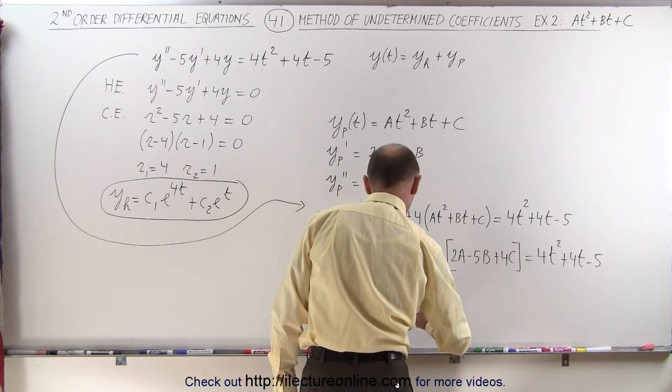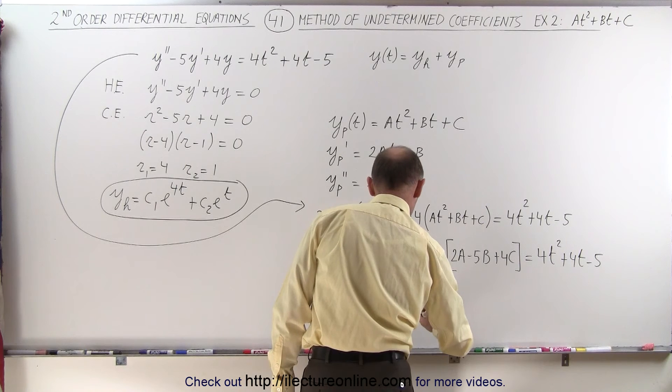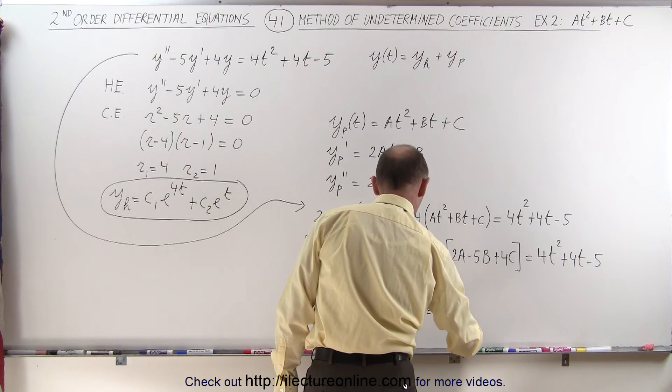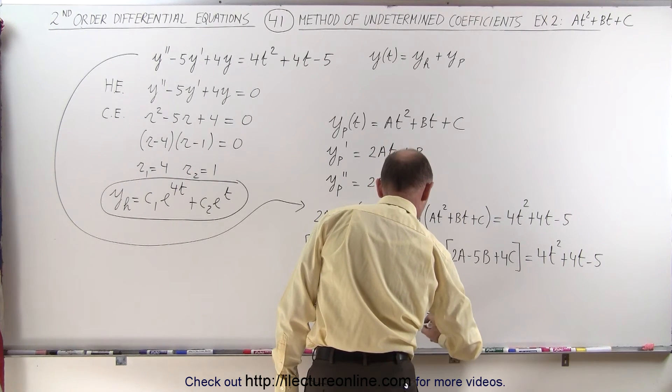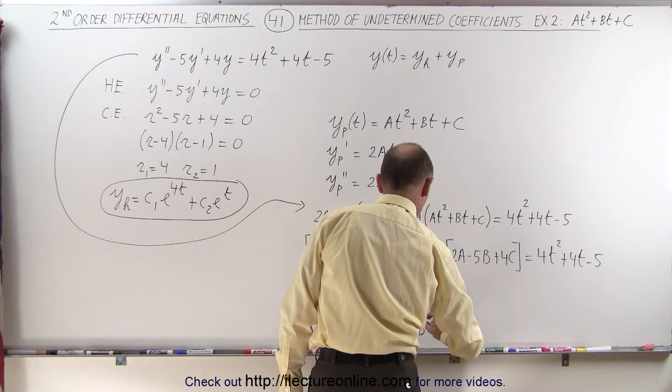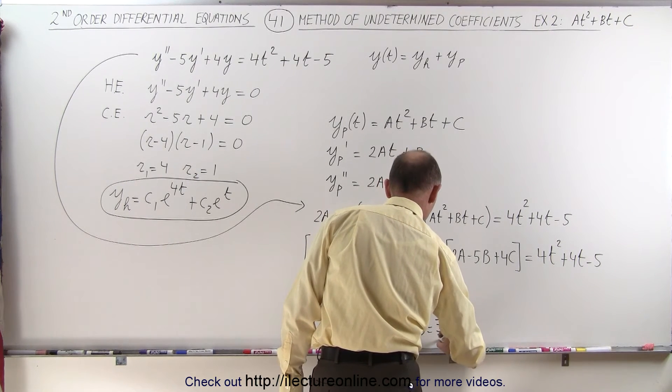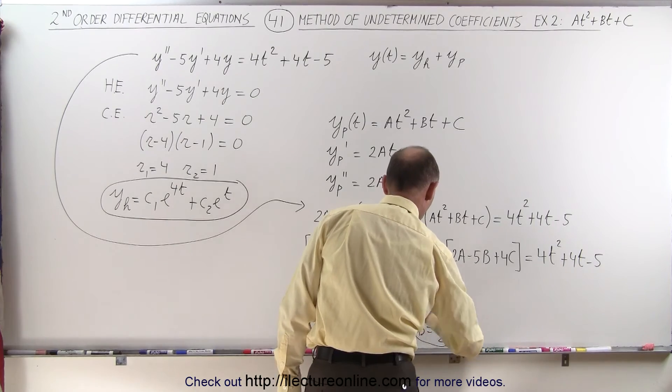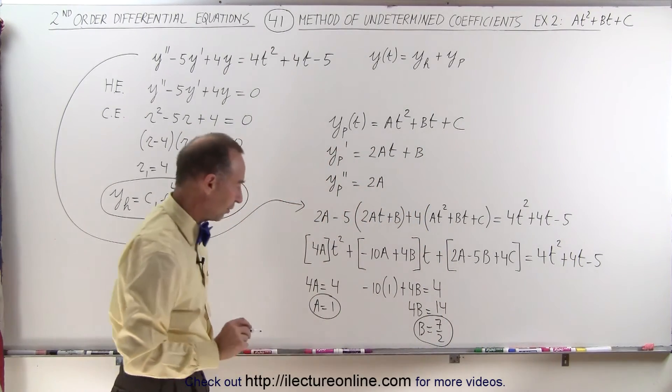So we end up with 4b is equal to 4 plus 10, or 14. That means b is equal to 14 divided by 4, which is 7 divided by 2. So now we have our second coefficient.